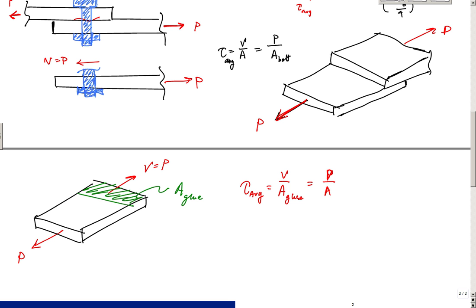This is the basic idea behind bolted connections in steel construction and something you might find in ASME or AISC codes. The formulas are basically the same — tau average = V/A — except with code modifications depending on the surface or materials used. There are other ways a connection can fail besides bolt shear, but we won't address those here.